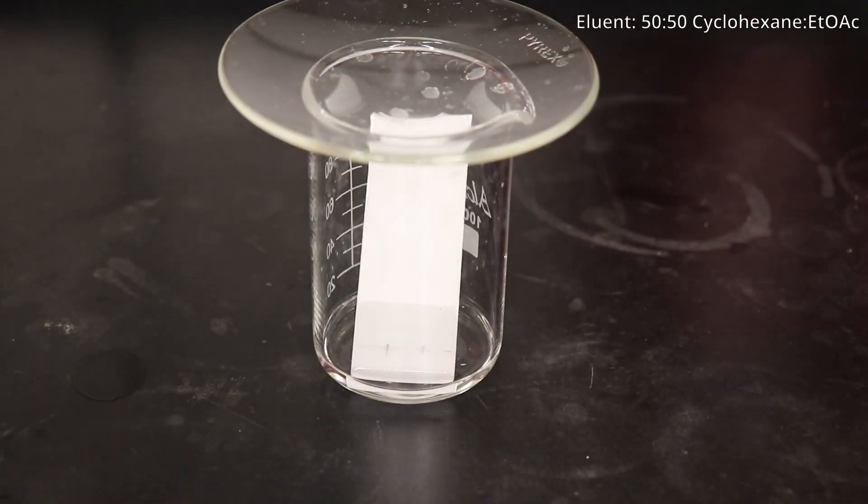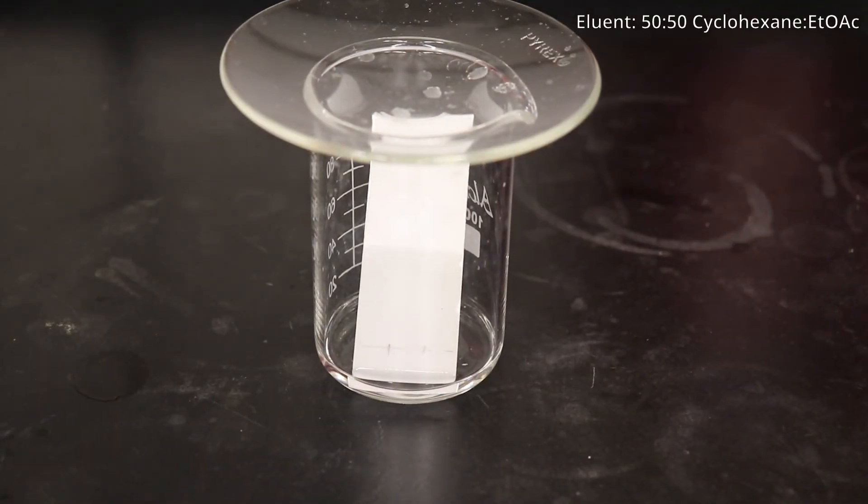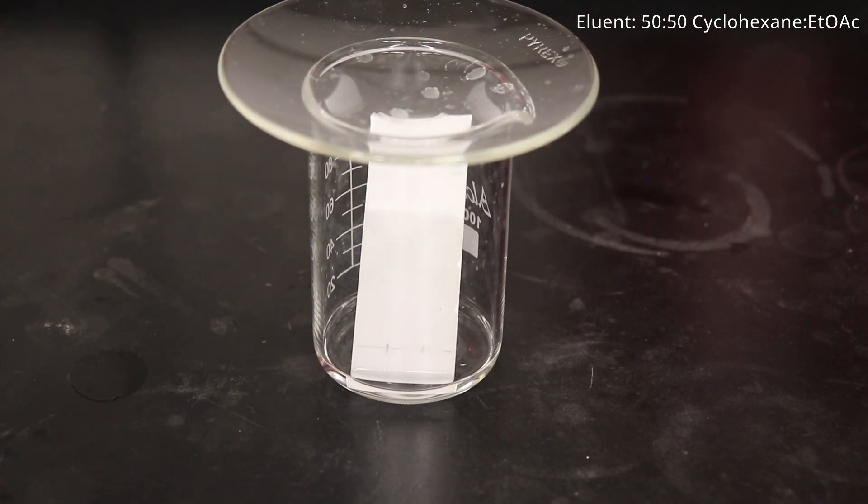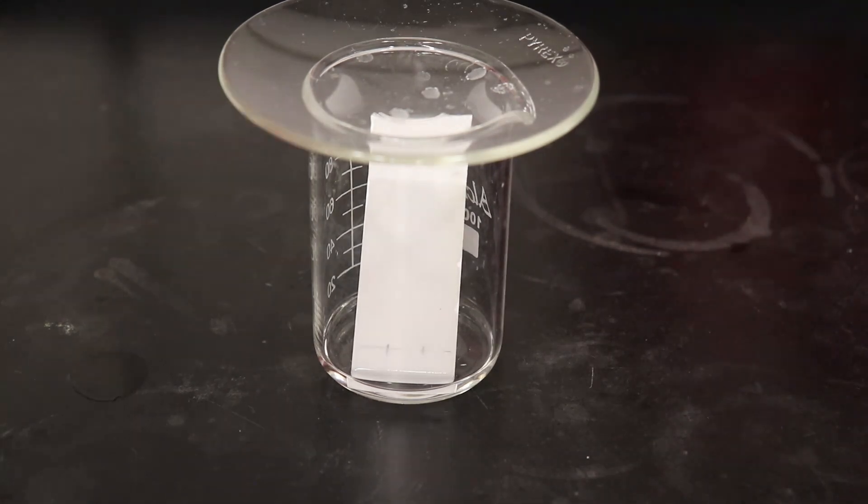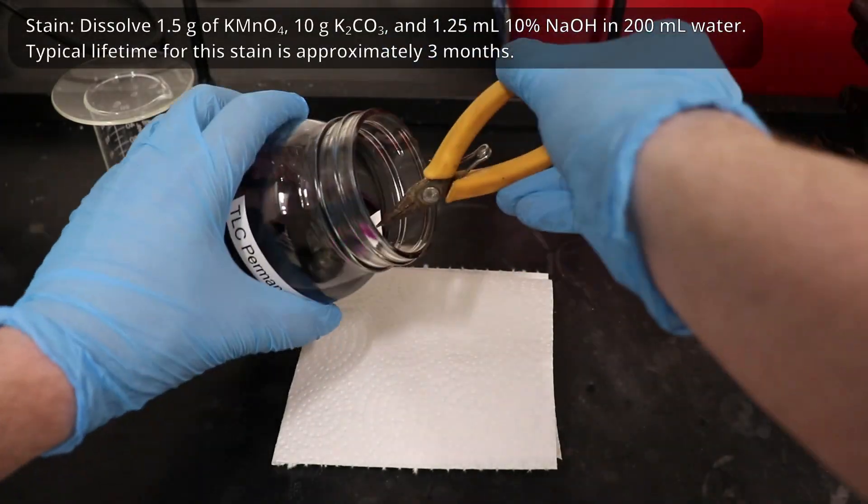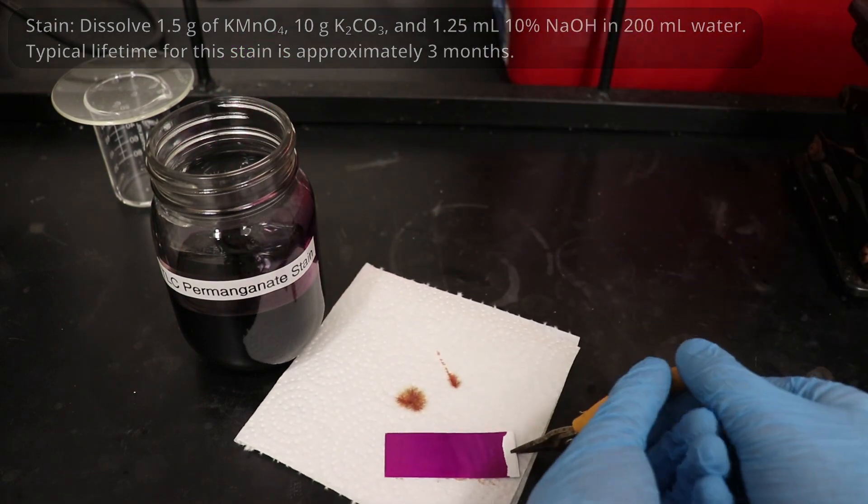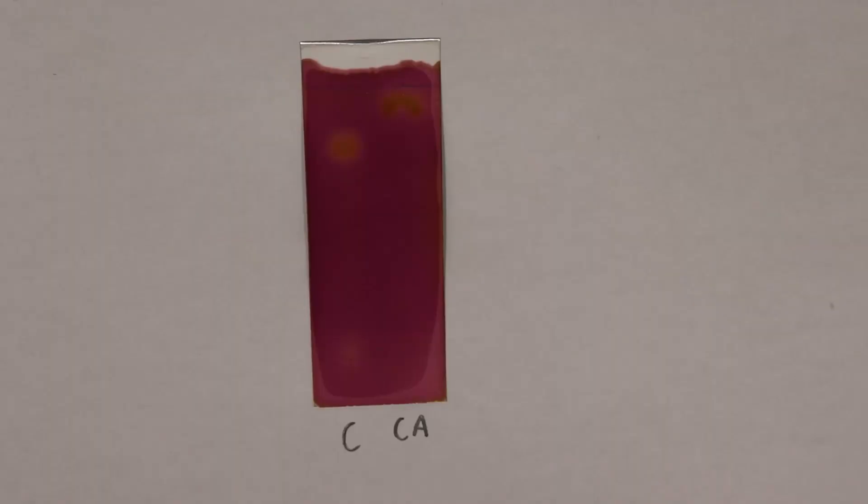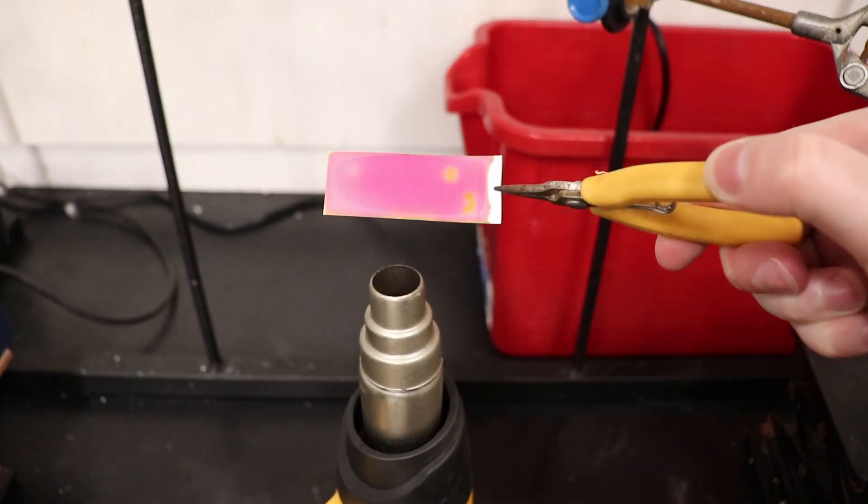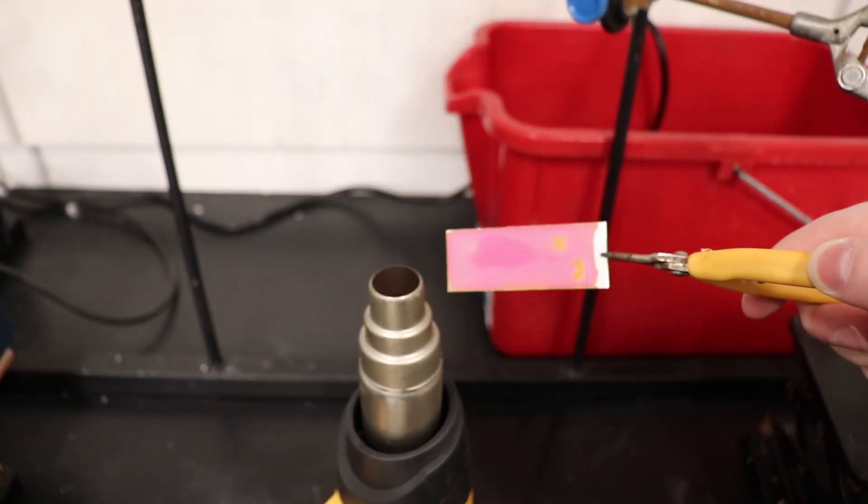Next I ran a TLC against the starting cholesterol to see if there was any starting material remaining in my product. For an eluent, I used a 50-50 mixture of ethyl acetate and cyclohexane. The plate was stained with permanganate, and the yellow spots from the reaction of the permanganate with the alkene in cholesterol and cholesterol acetate can be seen. The stain was developed with a heat gun, making the spots even more clearly visible.